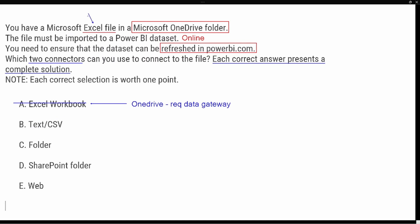Option C is the folder connector. The folder connector will allow us to connect into OneDrive, but once again because this is located on our desktop it's going to require a data gateway in order to refresh inside the Power BI service. Anytime you have a file located on your desktop, you have to have a data gateway to refresh it properly. So yes, we can connect into OneDrive, but we cannot use this as a complete solution because the question says no additional requirements. As we think about the SharePoint folder — SharePoint can be synced with your OneDrive.